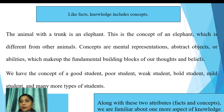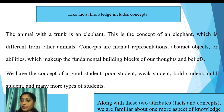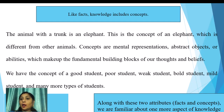The animal with the trunk is an elephant — this is the concept of an elephant, which is different from other animals. Concepts are mental representations or abstract objects or abilities which make up the fundamental building blocks of our thoughts and beliefs. We have the concept of a good student, poor student, weak student, bold student, mild student, and many more types.